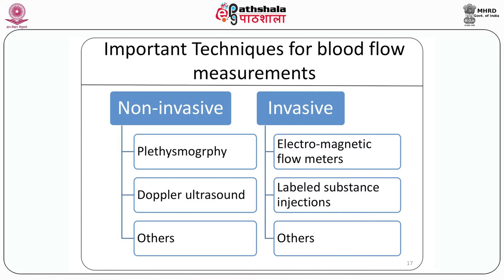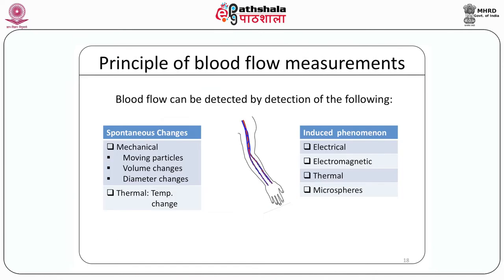The blood flow measurement techniques may be divided into two categories: non-invasive and invasive. Most commonly used techniques in the non-invasive category are plethysmography and Doppler. The techniques which use the principles of electromagnetic flow meters and radioisotope injections fall under the invasive category. This important slide gives information on the basic principles that work for measuring blood flow.